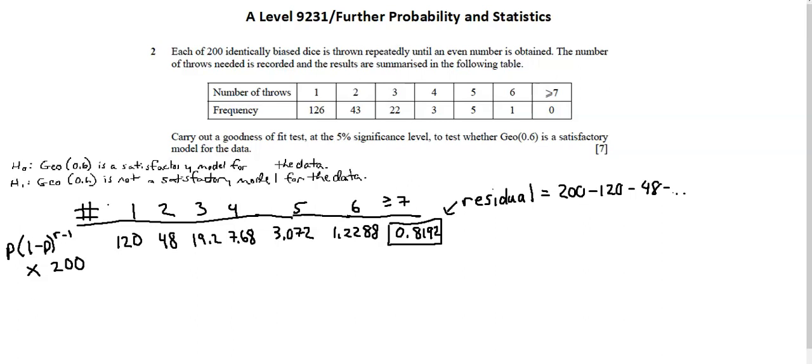From here I need to adjust because my expectations all need to be greater than or equal to 5. And I have three categories, 5 rolls, 6 rolls, 7 rolls, that are all less than 5. So I'm going to add the 7 plus category to the 6.